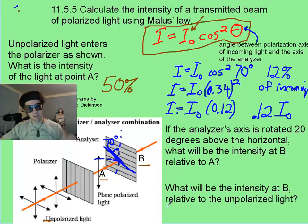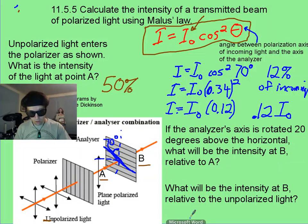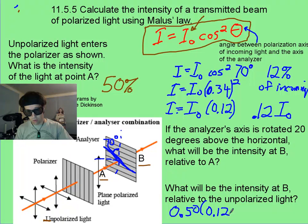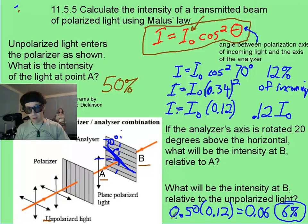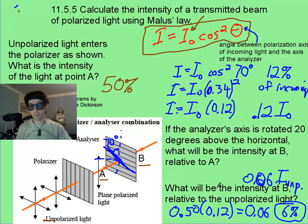For this last part, you have to remember that the light coming in was unpolarized, and then it was reduced to 50%, and then that light was then reduced to a further 12%. So you can just say that you're going to have 0.5 times 0.12, and that's going to give you 0.06, or 6% of what you had before, or you could say 0.06 of the initial unpolarized stuff. So thank you so much.